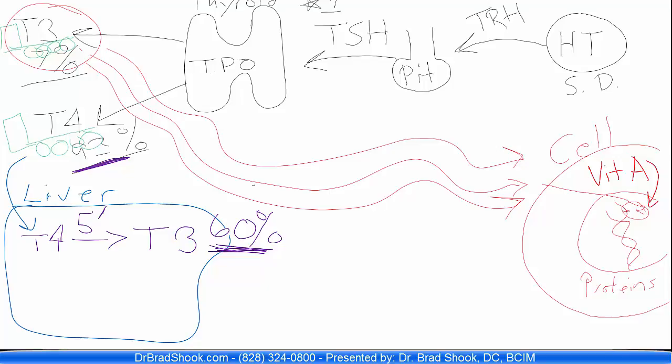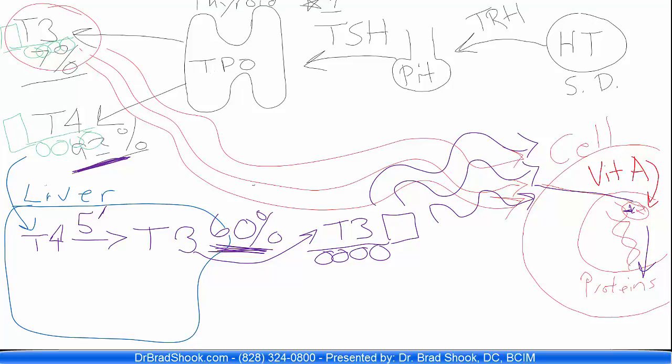That T3 then gets put into the circulatory system. It hops on that binding protein that carries it to the target tissues. It goes into the circulation, gets carried to the cell where it needs to be used, goes into the cell, attaches to the receptor on the DNA right there in the presence of vitamin A, triggers the DNA to produce proteins. So that's 60%. We have to have this conversion in the liver to get to T3.